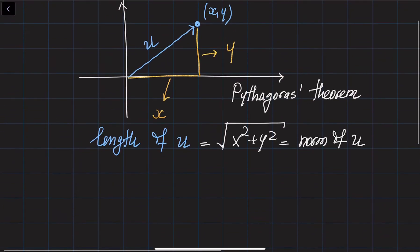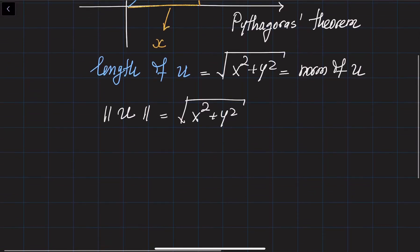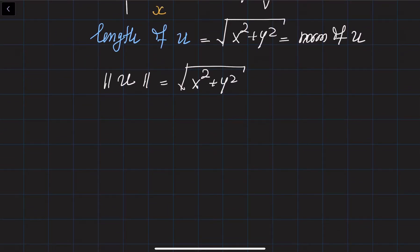We denote the norm of the vector u with two vertical lines before and after the vector, and this equals the square root of x squared plus y squared in two-dimensional space. Let's do an example first, and then we're going to generalize this idea to higher-dimensional vectors.